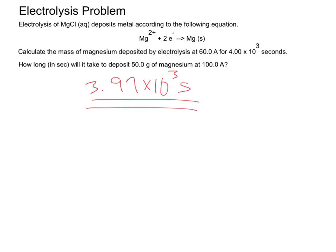So it'll still take about 4,000 seconds to deposit that much magnesium. But, we're essentially depositing twice as much magnesium as we did in the previous problem. Or, at least, a good amount more. 50 grams instead of 30.